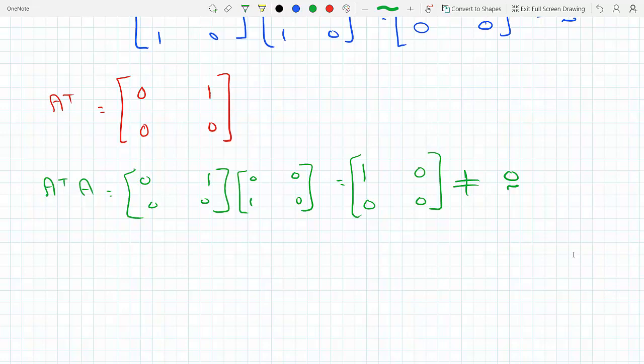The rows of the transpose used to be the columns of the original, so that means we're taking the dot product of the rows of the original with themselves. We're taking the columns of A with themselves. The only way we can get zero is if the dot products of these columns is zero.